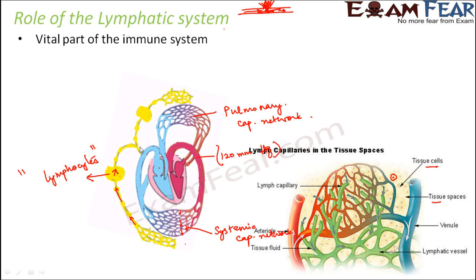Finally, these lymph vessels open into the blood vessels just before they enter the heart, carrying deoxygenated blood. So the fluid that leaked out from the blood capillaries is sent back to the heart via the lymphatic system. It acts as an alternative path that takes up whatever fluid or blood components got leaked out and carries them back to the blood vessels.